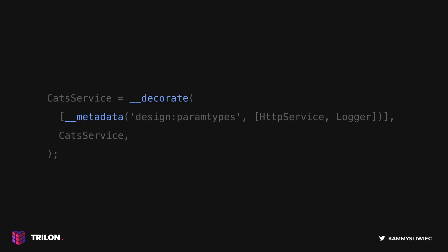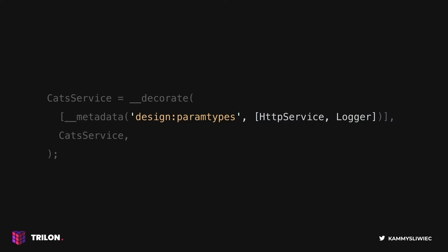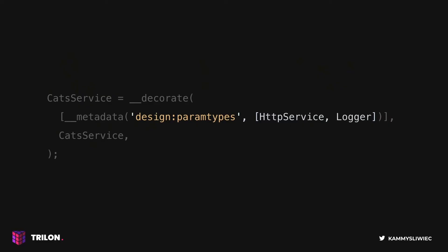These helper functions check whether you have a reflect object on the global scope and assign metadata accordingly. The most important part is this: design:paramtypes is a TypeScript metadata key used for parameter metadata. Regardless of whether you interact with a constructor or a normal method, the same key is used. The second argument is an array containing references to the classes needed in this particular context — this metadata was extracted from the constructor at compilation time.